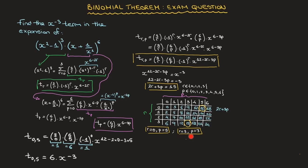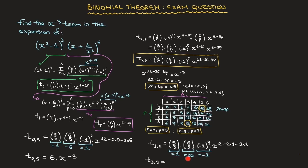Now we calculate the second term with r equals 3 and p equals 3. That's t(3, 3) equals the binomial coefficient 3, 3 times the binomial coefficient 6, 3 times negative 1 raised to the power of 3 times x to the power of 12 minus 2 times 3 minus 3 times 3. The binomial coefficient 3, 3 equals 1, the binomial coefficient 6, 3 equals 20, negative 1 to the power of 3 equals negative 1, and 12 minus 6 minus 9 equals negative 3. So t(3, 3) equals 1 times 20 times negative 1, which is negative 20 times x to the power of negative 3.